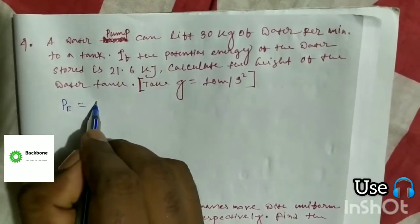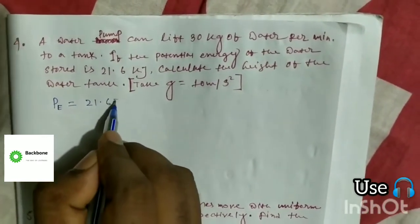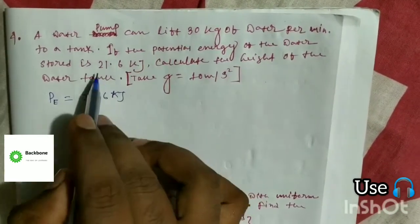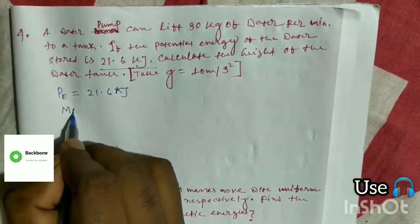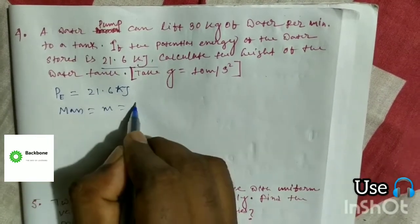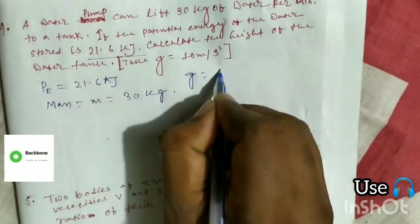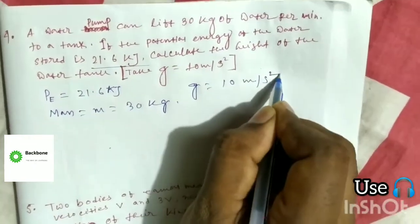Given data: Potential energy is equal to 21.6 kJ, mass M is equal to 30 kg, and G is equal to 10 meters per second squared.